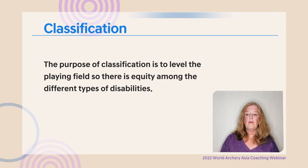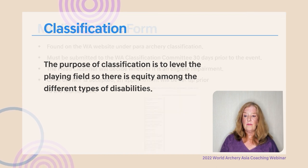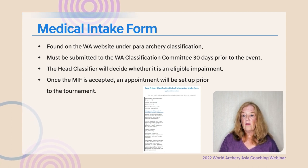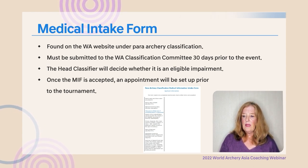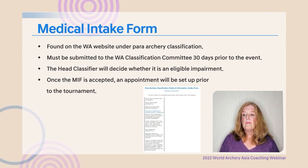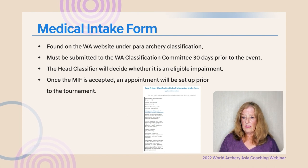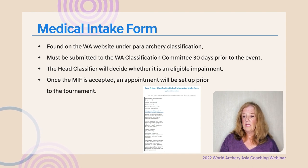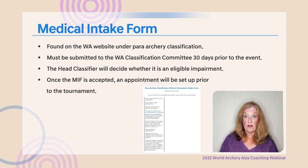The purpose of classification is to level the playing field so there is equity among the different types of disabilities. The first thing an athlete needs to do is fill out a medical intake form, found on the World Archery website under the Para Archery classification page. It must be completed in English, typed — handwritten is not accepted — and turned in 30 days prior to a tournament. The head classifier then determines if there's an eligible impairment, and once the MIF is accepted, an appointment is set up for classification prior to the tournament.